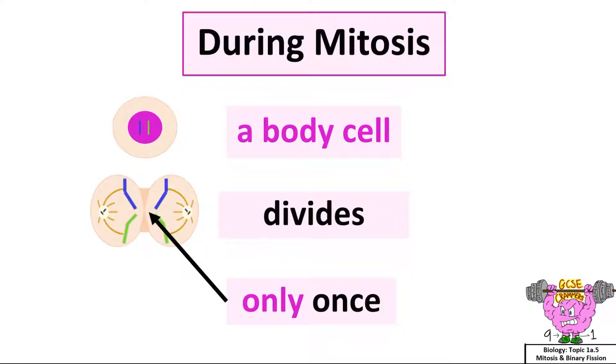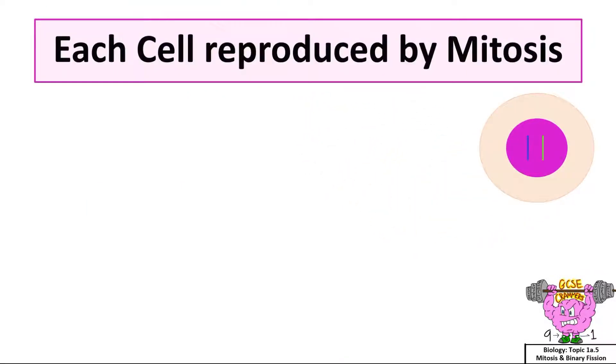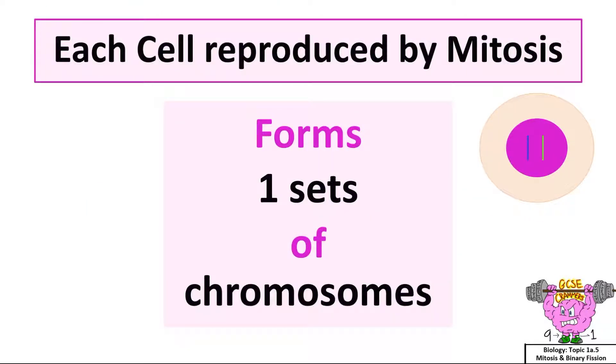use mitosis to replicate cells for growth and replacing damaged cells. During mitosis, a body cell divides only once. Each cell reproduced by mitosis forms one set of chromosomes that contains 46 chromosomes. Therefore, this means each cell is made up of 46 chromosomes.